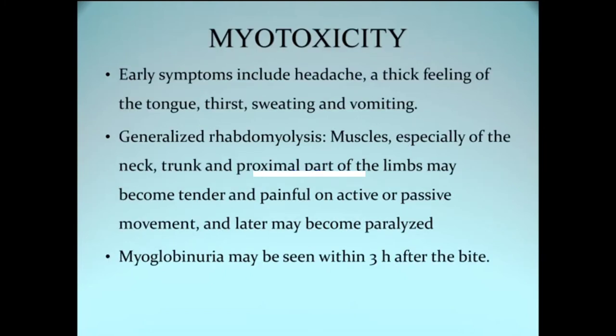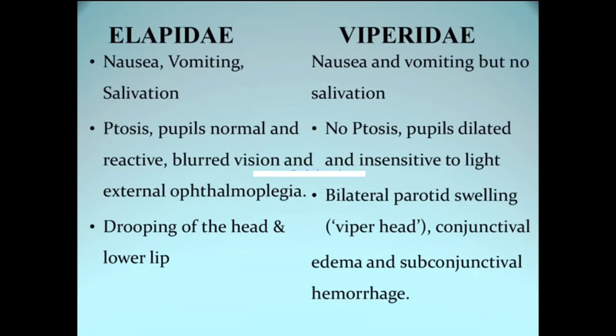In myotoxic snake bite, early symptoms include headache, a feeling of thickness of the tongue, and severe thirst. The body then undergoes generalized rhabdomyolysis, more marked in proximal muscles of the neck and trunk, with severe tenderness and pain on active or passive movement. The person then becomes paralyzed. Myoglobinuria appears within 3 hours after the bite of a myotoxic snake.